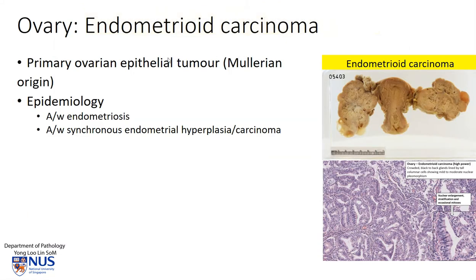Endometrioid carcinoma of the ovary is part of the spectrum of ovarian epithelial tumors, together with serous and mucinous tumors. Clinically they may be associated with a background of endometriosis, so sometimes in the affected ovary there may be some remnant endometriotic cysts. There may also be an association with endometrial hyperplasia or even carcinoma.